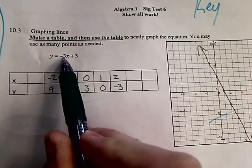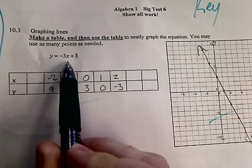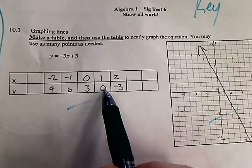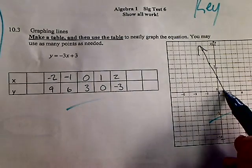So if I plug in one, what's one times negative three? Negative three. Plus three is zero, so the y is zero. Then you just plot that point. One, zero, dot.